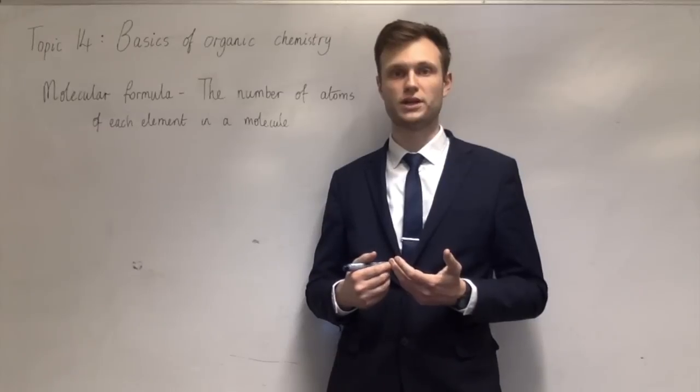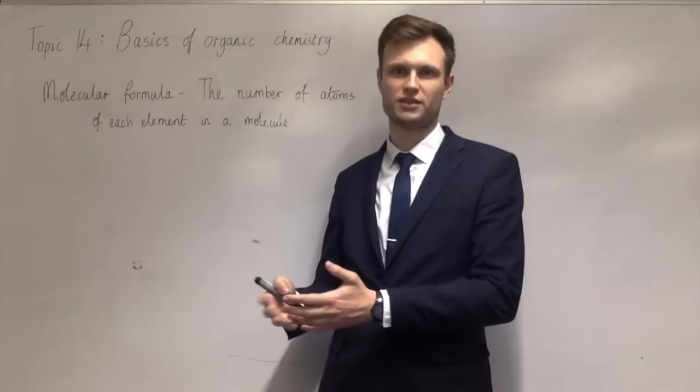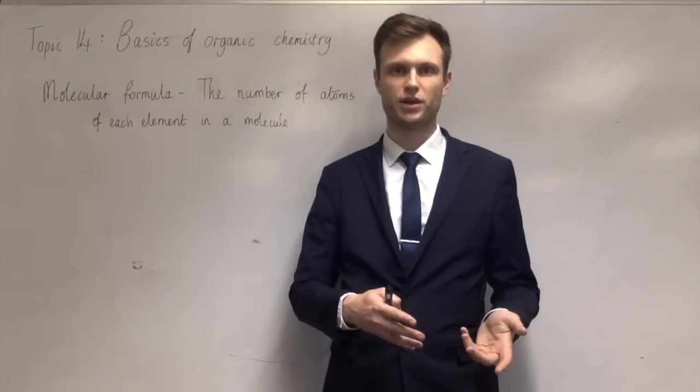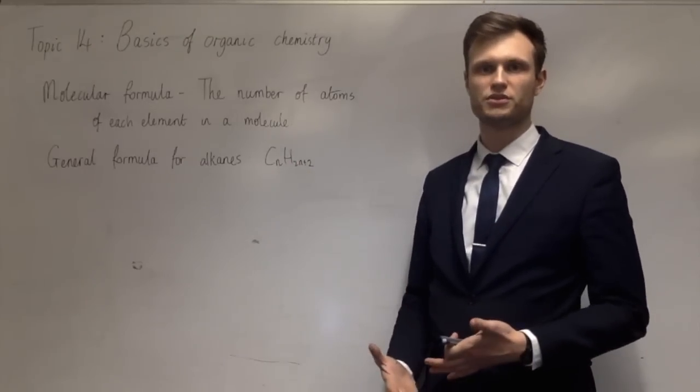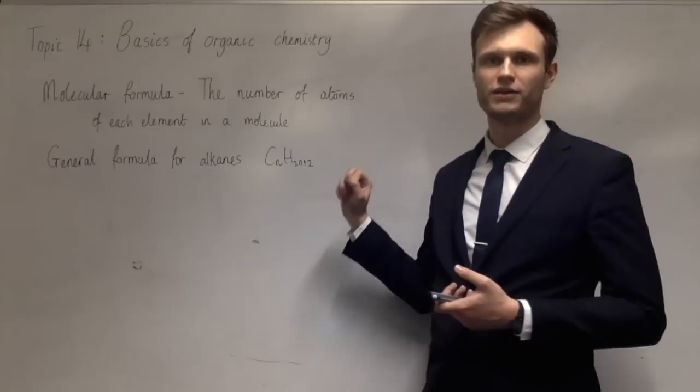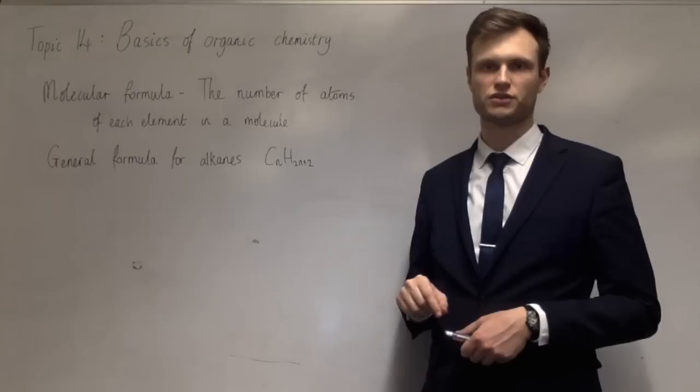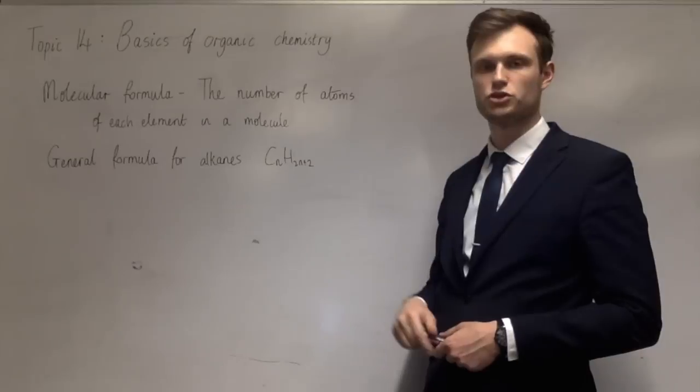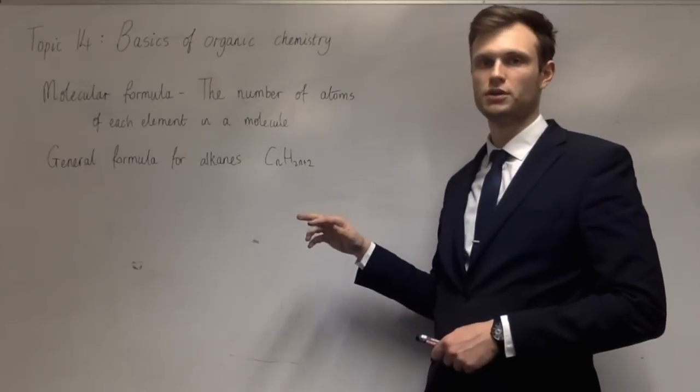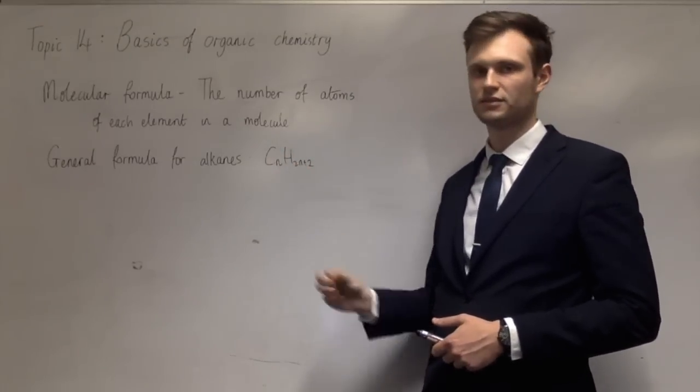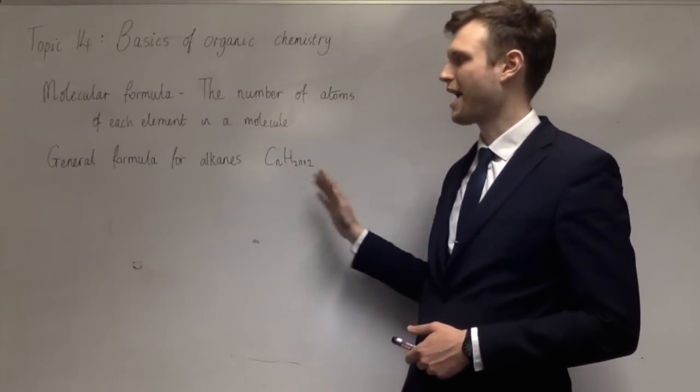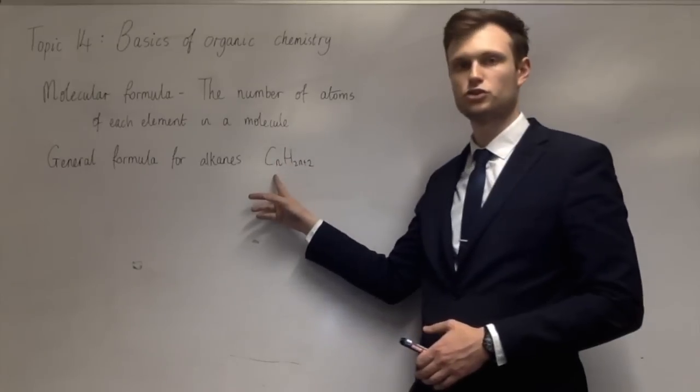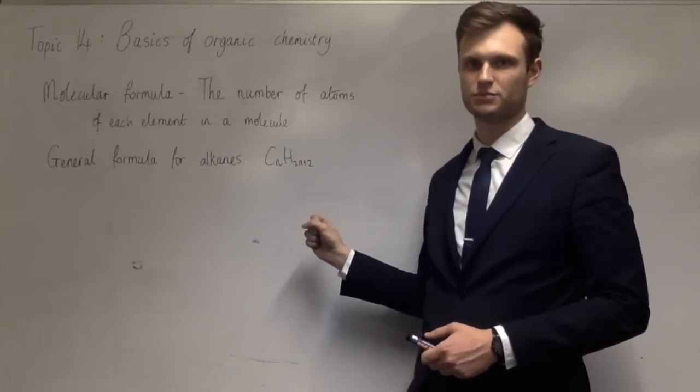The next one is general formula. That's what we're talking about with different homologous series. For instance, the alkanes, the general formula for the alkanes is CnH2n+2. So an alkane can have many different numbers of carbons. But however many carbons there are, there are always twice as many plus two hydrogens. So methane, for instance, is CH4, one carbon, and then one times by two is two plus two is four. Ethane will be C2H6, propane is C3H8, etc. Every member of the alkanes, whether it's branched or straight chain, will always have twice as many plus two hydrogen atoms than carbon atoms.